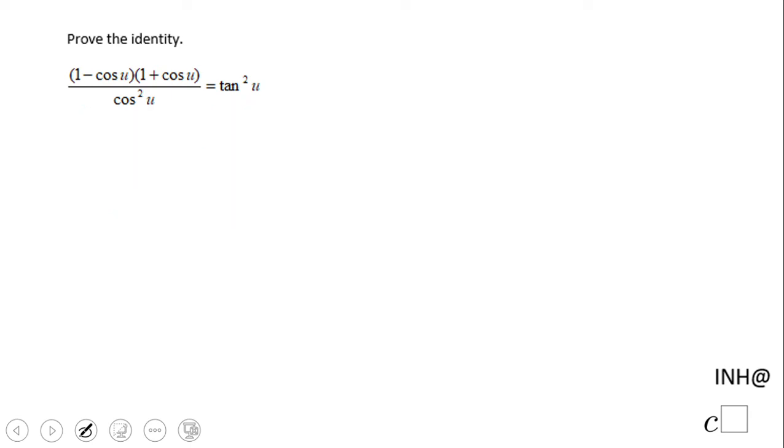Which in my opinion is the left side: (1 - cos u)(1 + cos u) over cos²u. What am I going to do here? I'm gonna multiply the two parts that are part of the numerator, 1 minus cosine u times 1 plus cosine u, and it would be useful if you remember this formula which is called difference of squares.